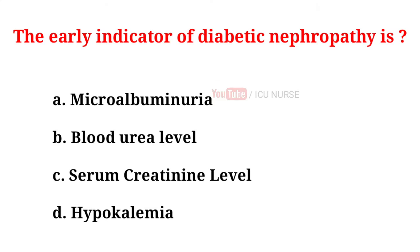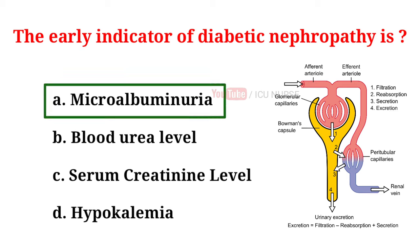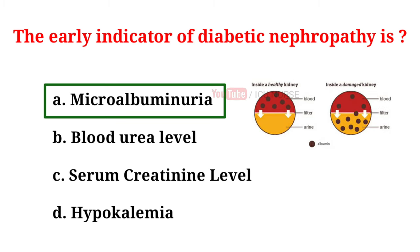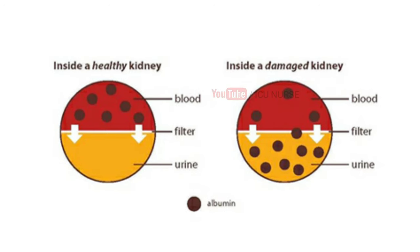The early indicator of diabetic nephropathy is: A. Microalbuminuria, B. Blood urea level, C. Serum creatinine level, D. Hypokalemia. And the correct answer is A. Microalbuminuria. Microalbuminuria remains the golden standard for early detection of diabetic nephropathy.